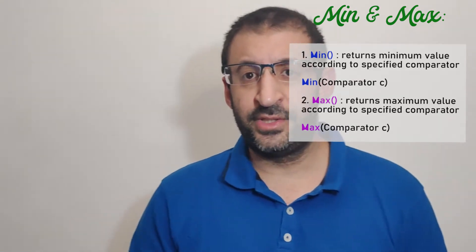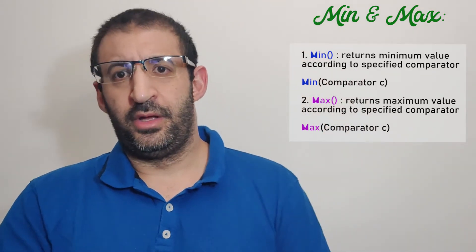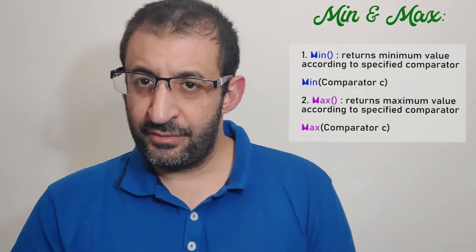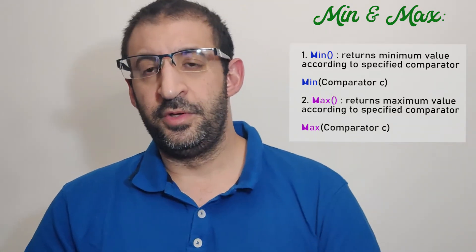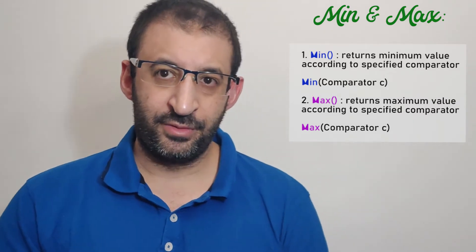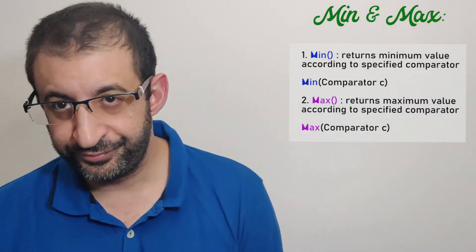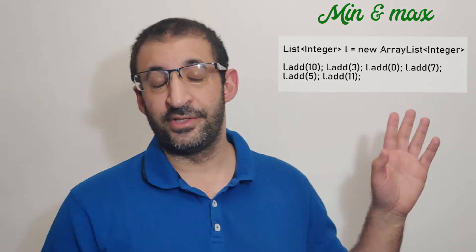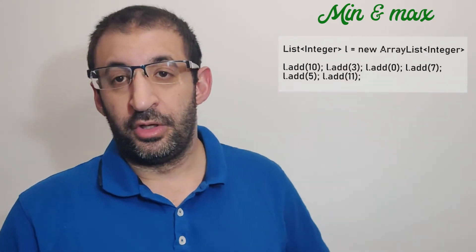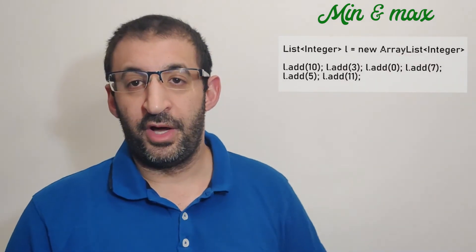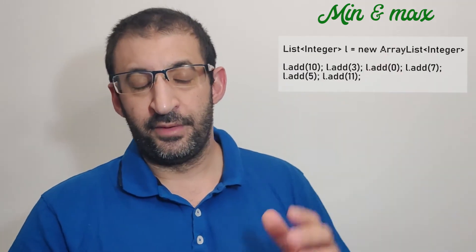So let's see an example with our list of integers, and we practice with the method min and max to get the minimum value and the maximum value. So that is numbers, our list. I will put 0, 3, 5, 7, 11, etc.